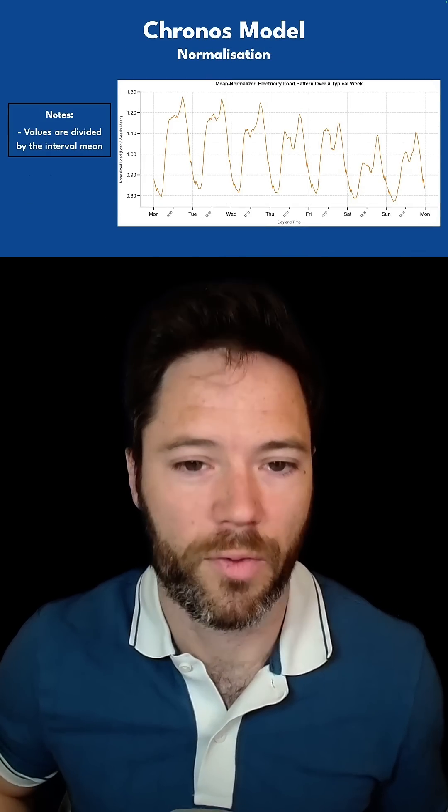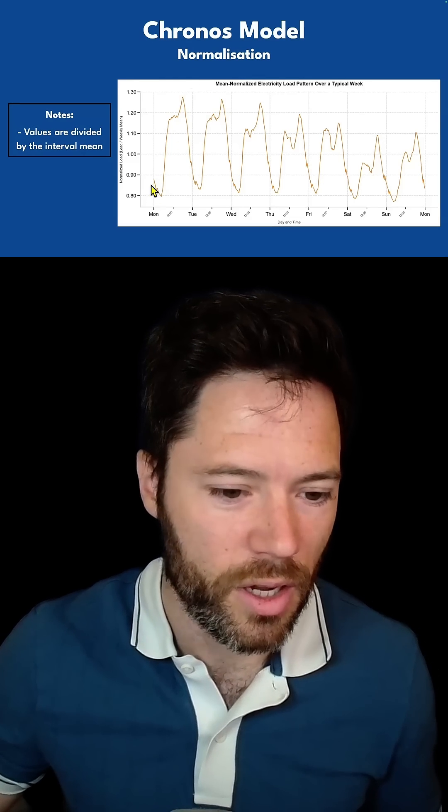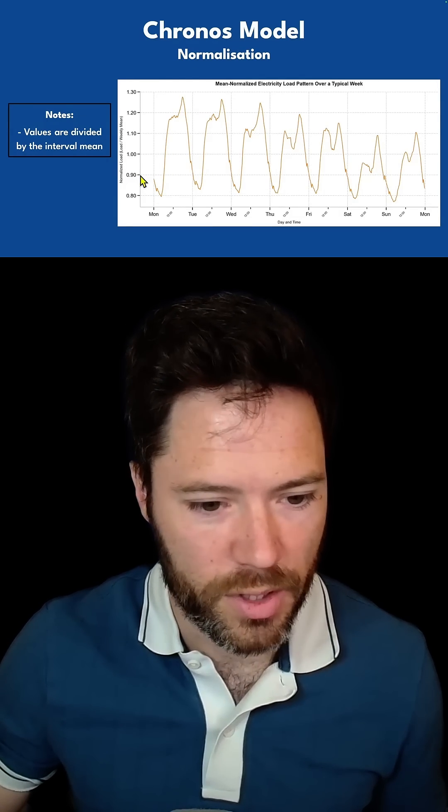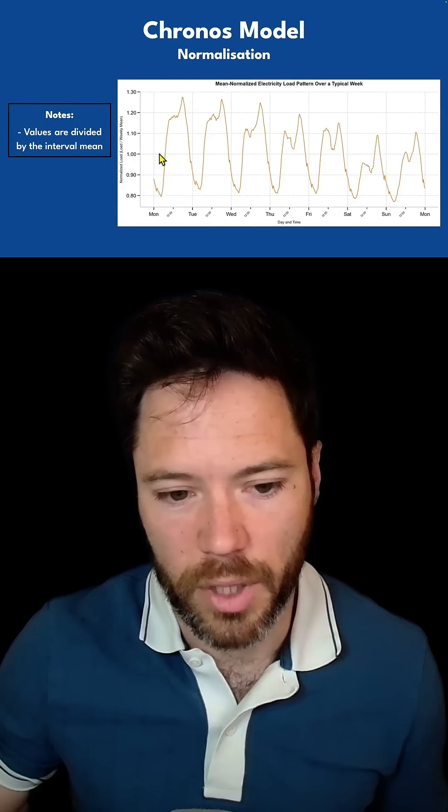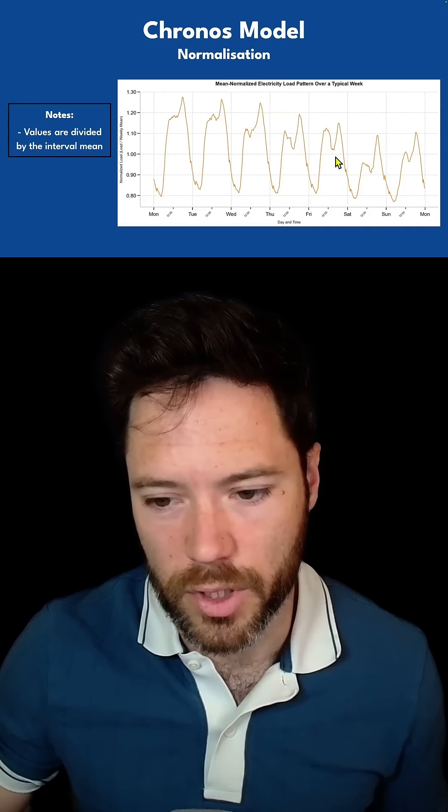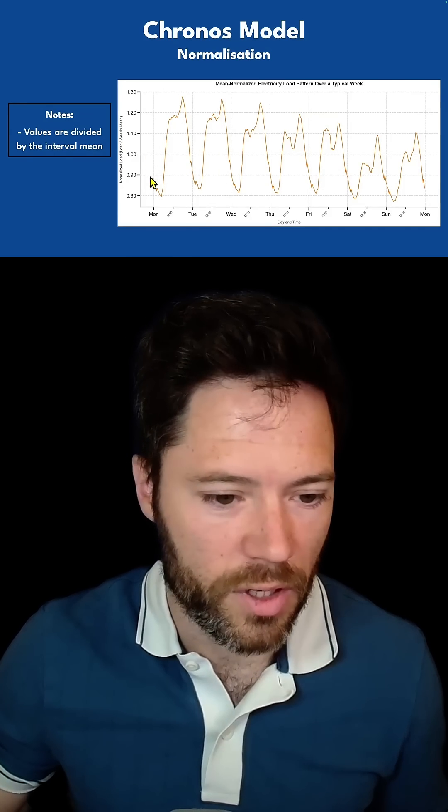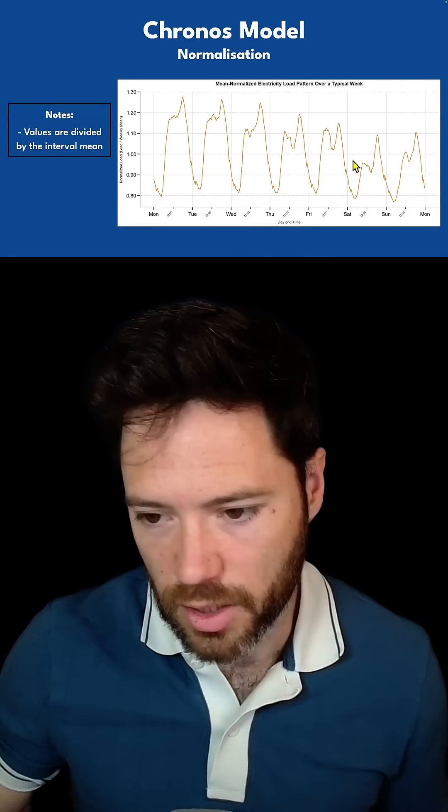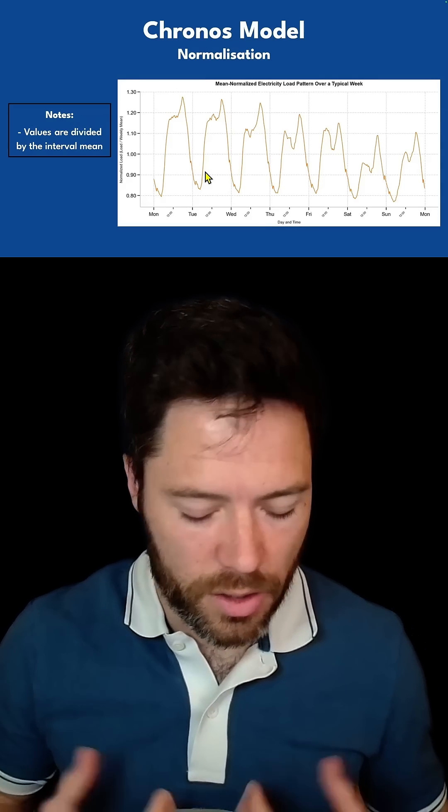The first step before quantization is normalization. This is a normalized version of the graph I showed you before. Quite simply, I've divided by the interval mean, so I've taken the mean and divided all the points by that. Now the mean of this graph is 1, and you can see oscillation about that point.